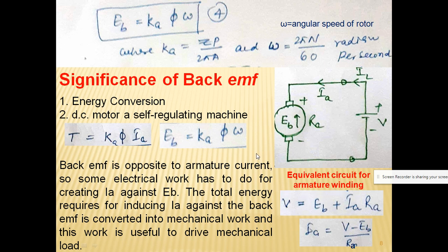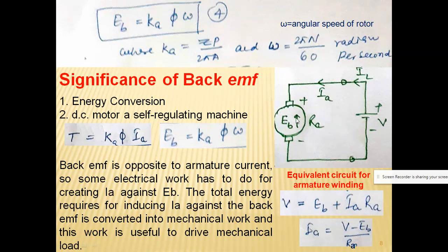When discussing the significance of back EMF, we must know the two key equations: torque T = Ka·φ·Ia and back EMF Eb = Ka·φ·ω. The back EMF opposes the armature current, so electrical work is done against Eb to create armature current. This electrical energy is converted into mechanical work, which drives the mechanical load — this is the first significance: back EMF facilitates electrical-to-mechanical energy conversion.